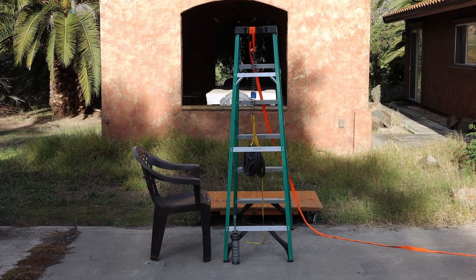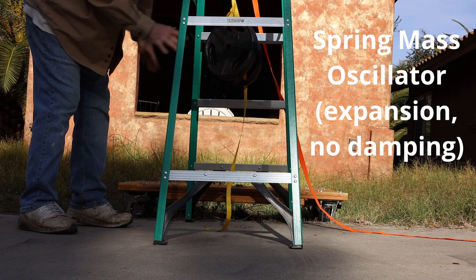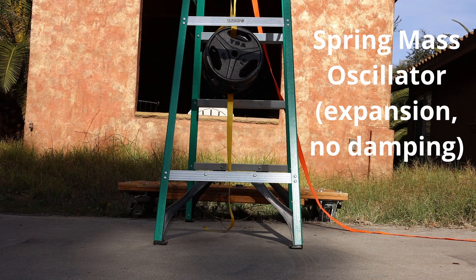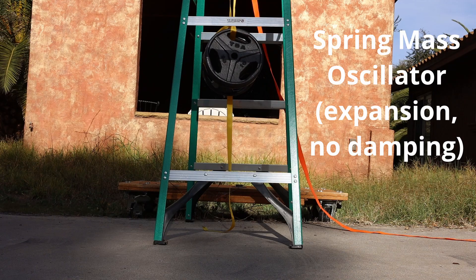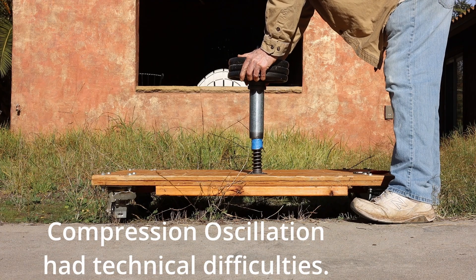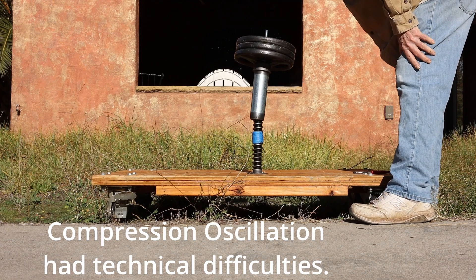A spring and mass form an oscillator that can oscillate for a long time. Damping is used to dampen this oscillation quickly. The damper turns the energy stored in the spring into heat. Omega n is the natural radian frequency of the mass in spring with no damper. Fn is the natural frequency in cycles per second of the mass in spring with no damper.